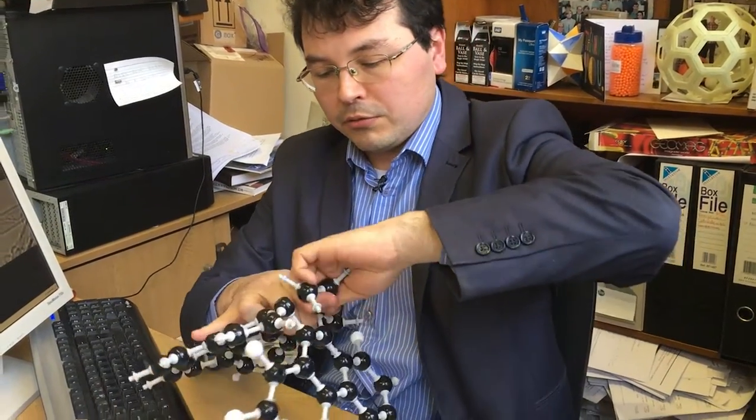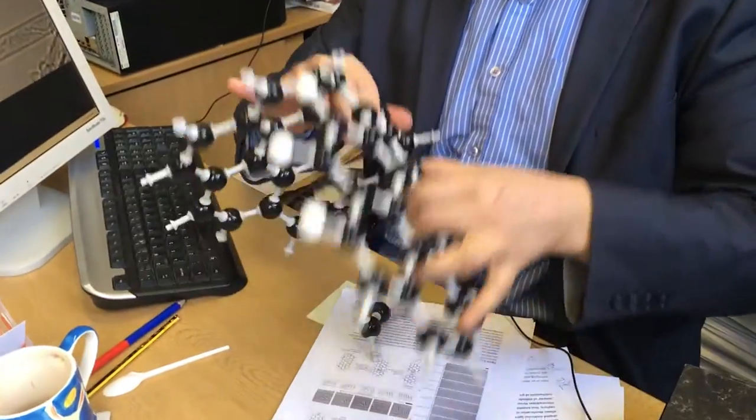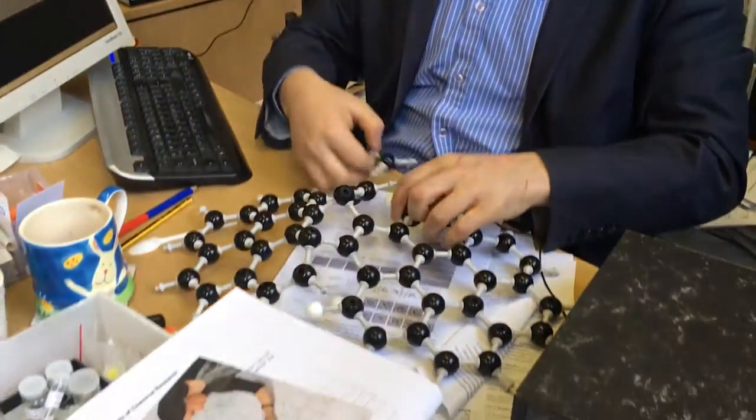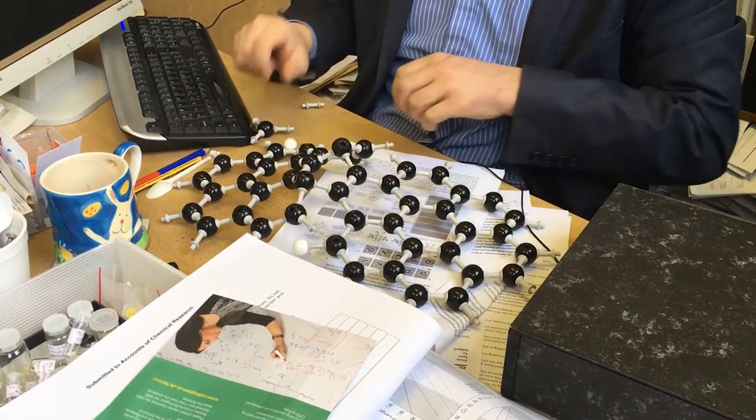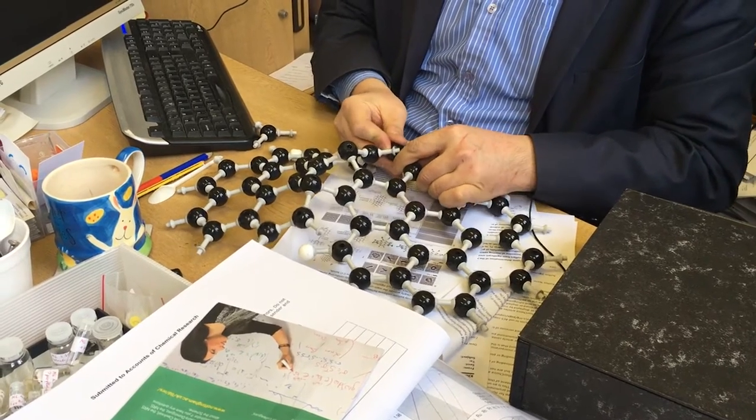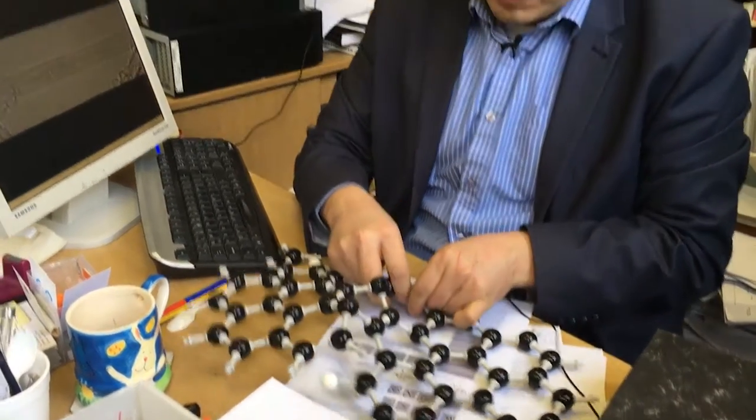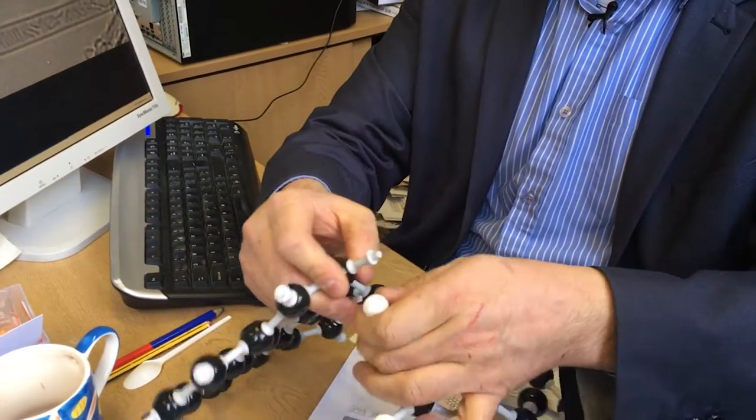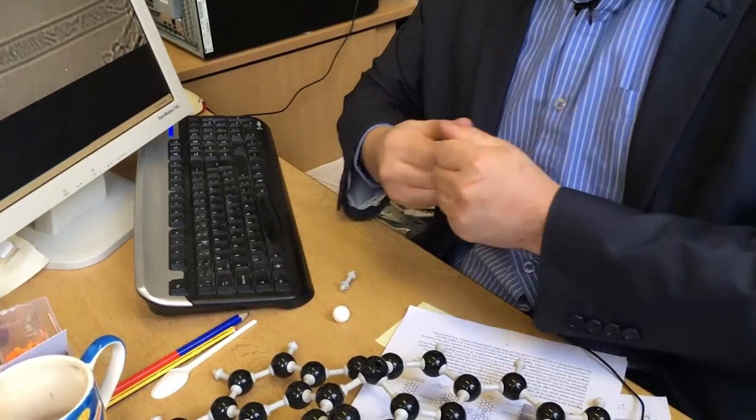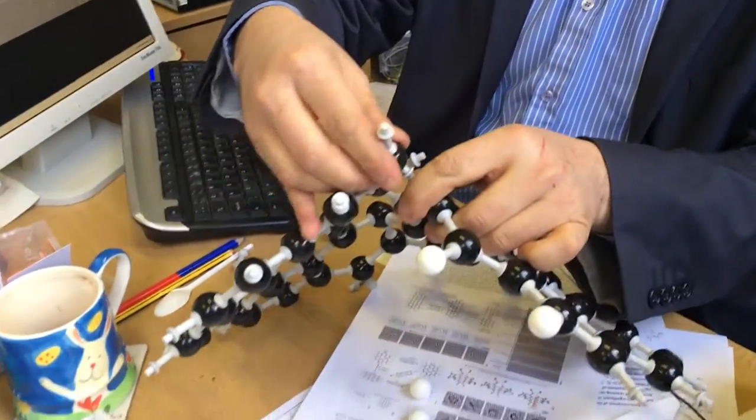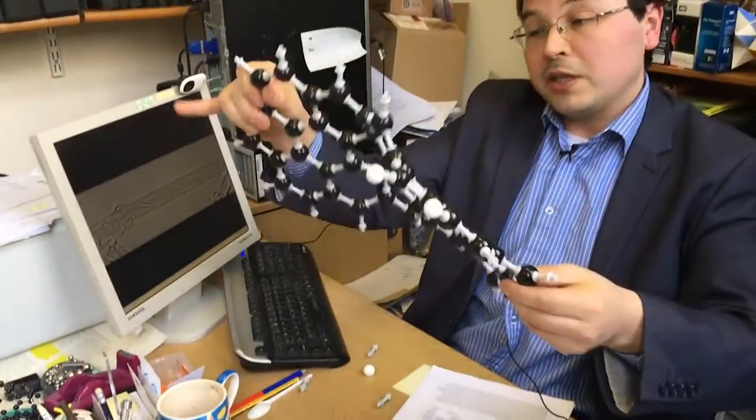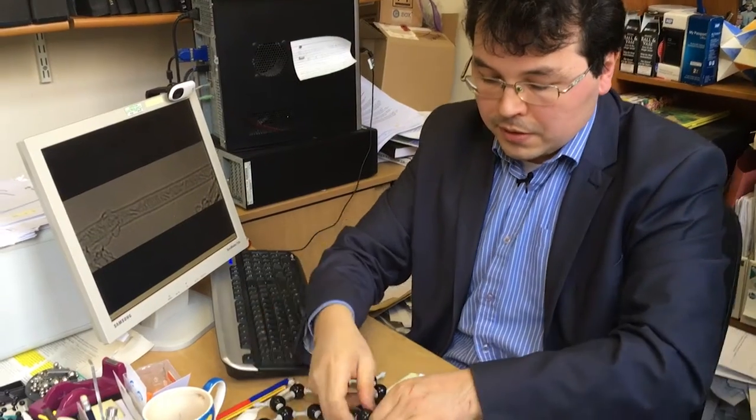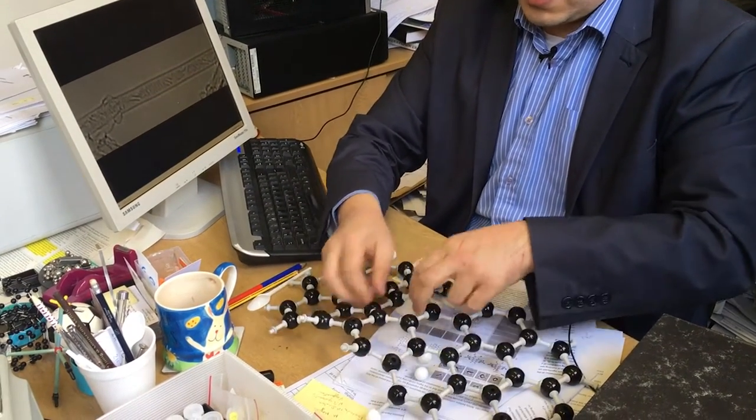So what happens then is that we rearrange it like this. We remove two carbon atoms and they moved to the other side of the molecule forming a hexagon. That's sort of already taking a different shape. The last thing, we just need to rearrange chemical bonds around the carbon atoms in the center.